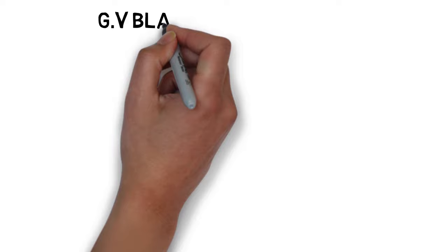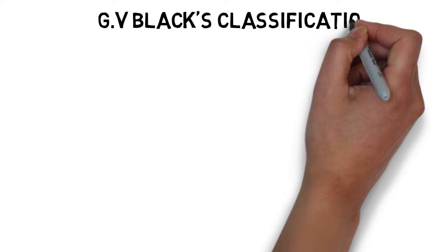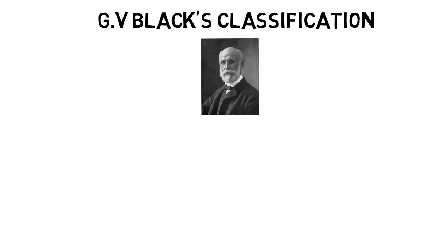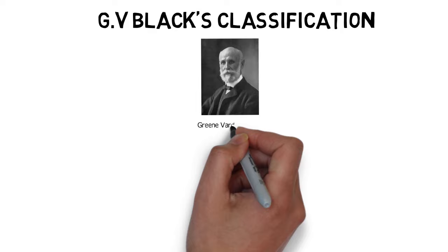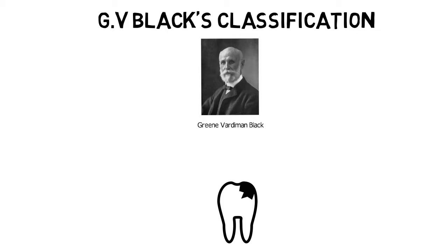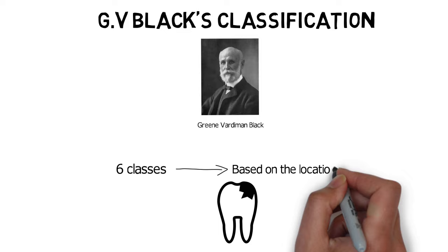Hello and welcome back everyone. Today in this lecture we will be looking into J.V. Black's classification of dental caries. There are many different classifications of dental caries that exist in modern times, but the most widely used and accepted by many organizations and teaching institutes is J.V. Black's classification, proposed by J.V. Black himself, who is also considered the father of operative dentistry. Based on the location of caries, he classified caries lesions into six classes or six groups.